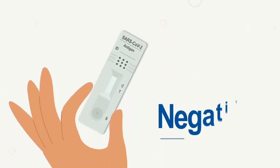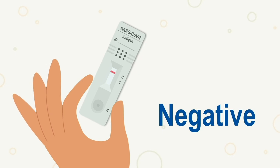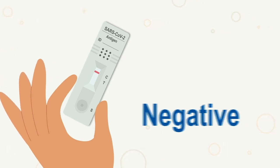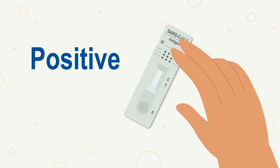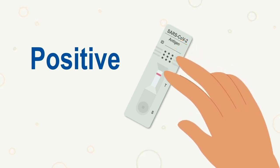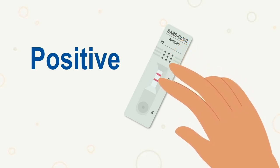If the test is negative, one colored band appears only in the control zone, C. If the test is positive, two color bands appear in the control zone and another in the test zone, T.